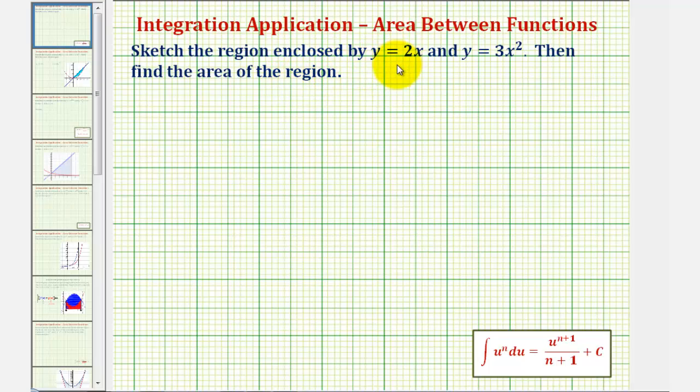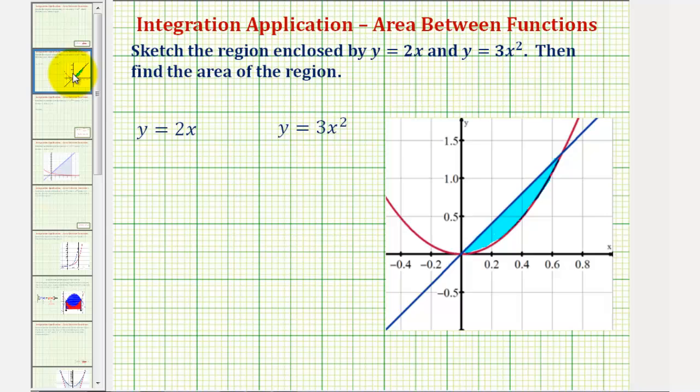We want to sketch the region enclosed by y equals 2x and y equals 3x squared, then find the area of the region. So if we graph these two functions on the coordinate plane, this would be our graph and we're looking for the area of this region shaded here in blue, which is the region enclosed by the two functions.